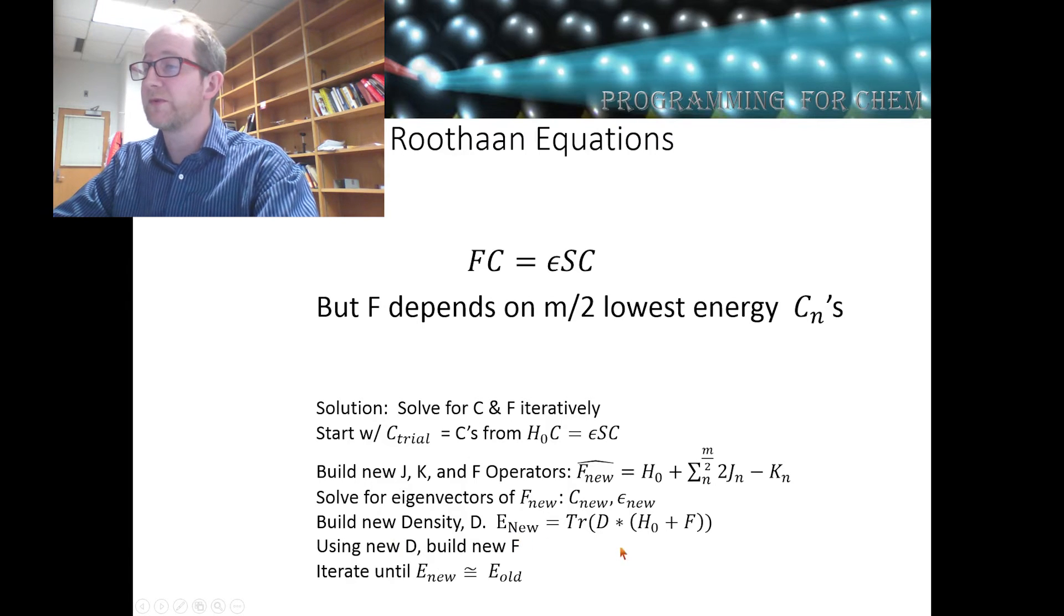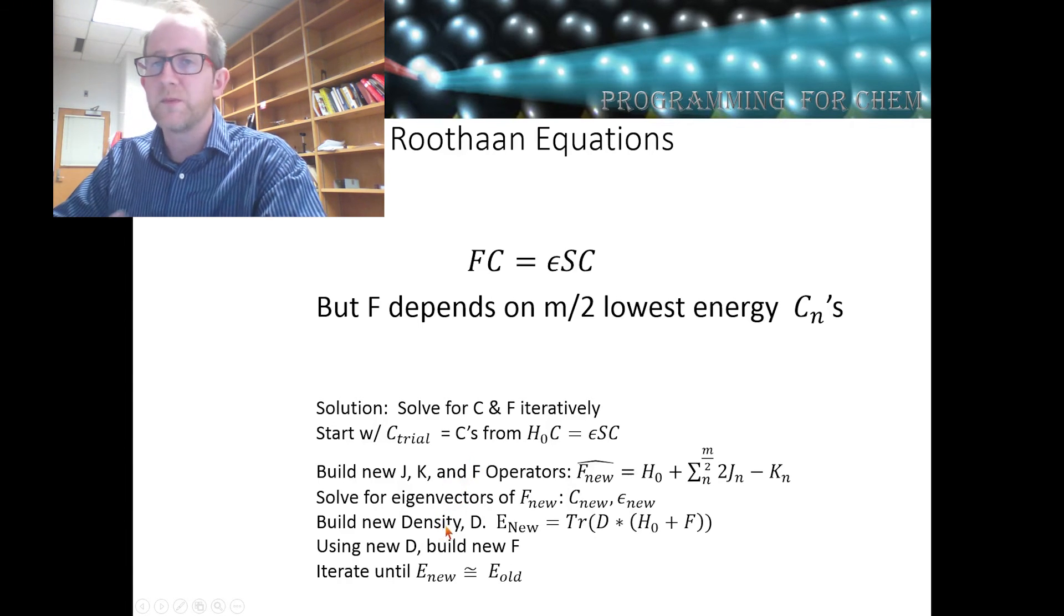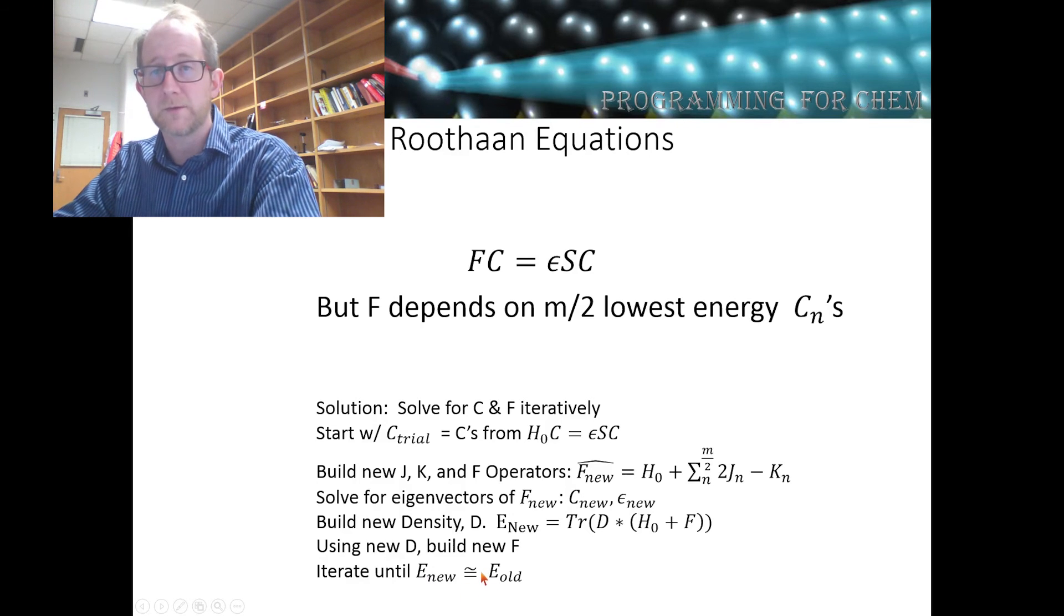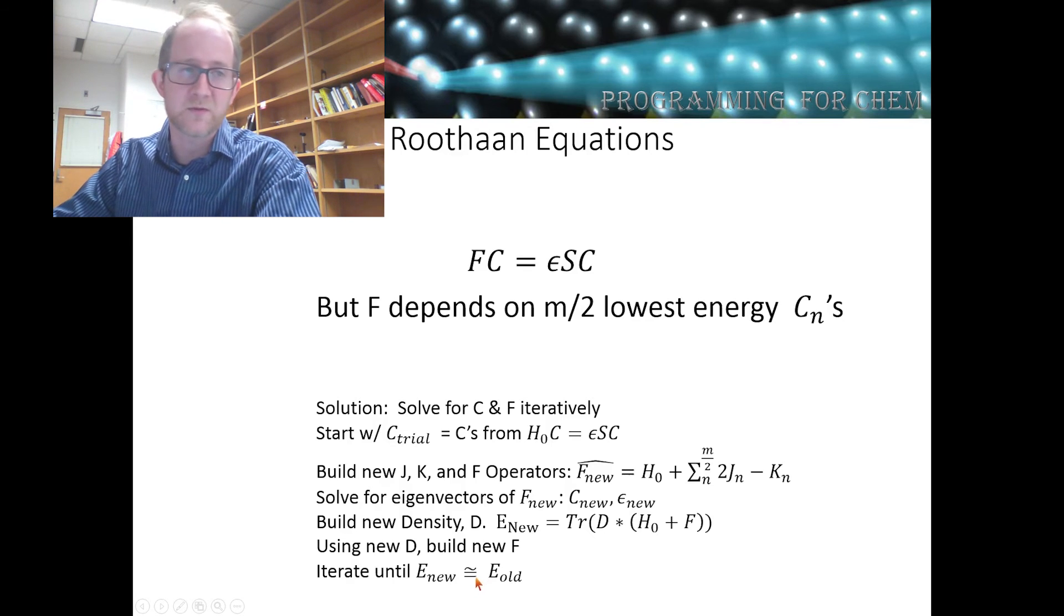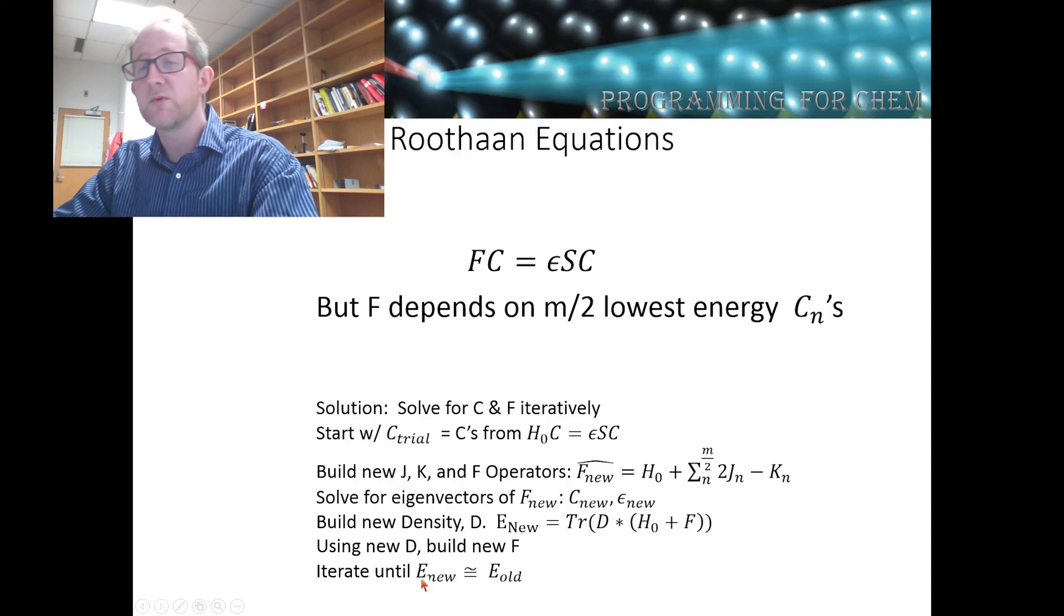Then, once we've done that, we have a new energy. Using that density, we'll build a new Fock operator by recalculating our Coulomb and exchange integrals. And then we're just going to repeat this process. We're going to calculate a new energy every time. Eventually, hopefully, if the algorithm works, we'll reach a point where we reach consistency in our energy. Or in other words, the new energy that we calculate will be pretty much the same as the energy that we just calculated. Once that happens, we'll say we've reached self-consistency. These equations, we've reached a stable solution. And we will use that as the energy, the electronic energy of our system. So that's our general plan.